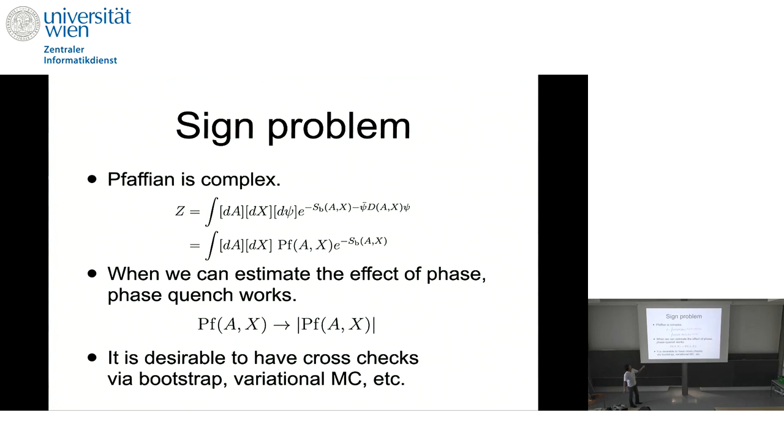In general, there's no reason that it's real positive. And you can actually, even for smaller matrix size, you can just substitute the random value of A or X, and you, in general, get the complex value.